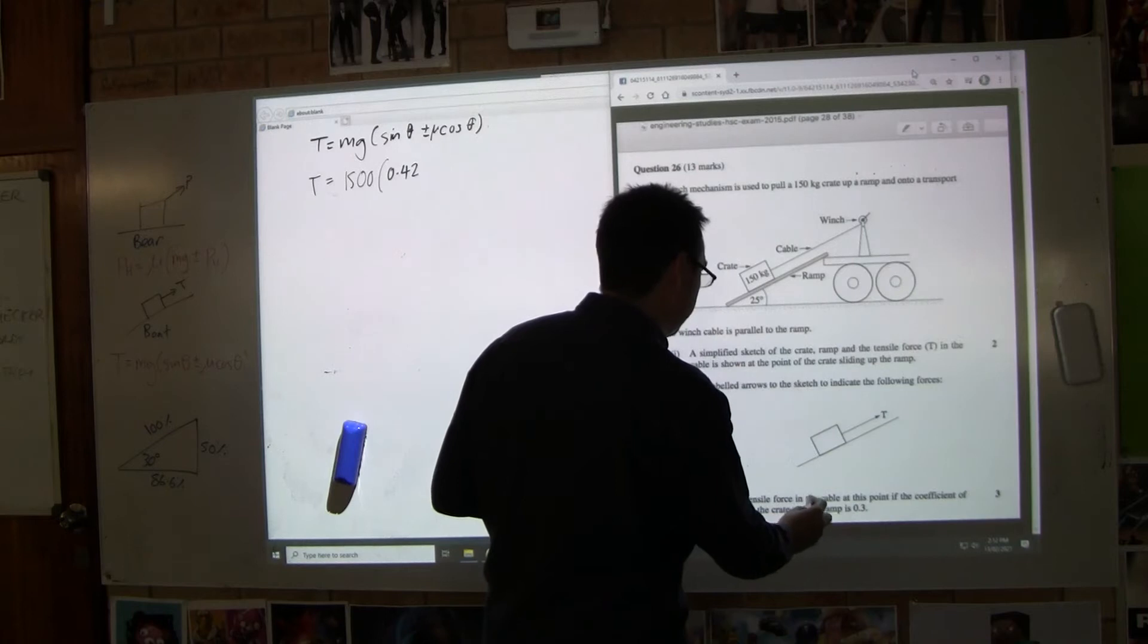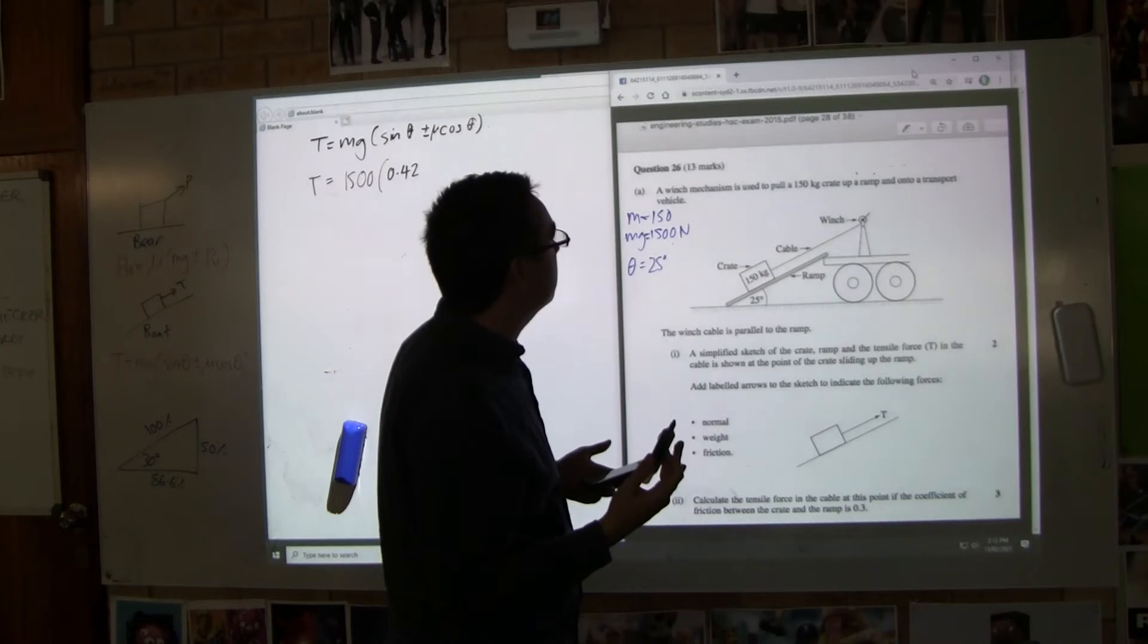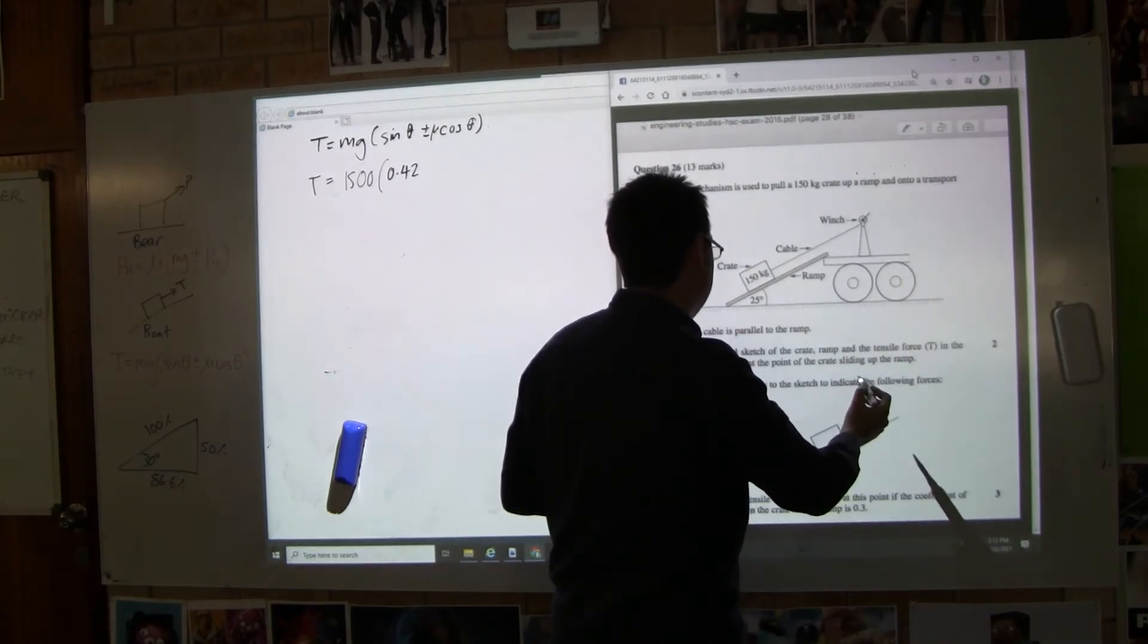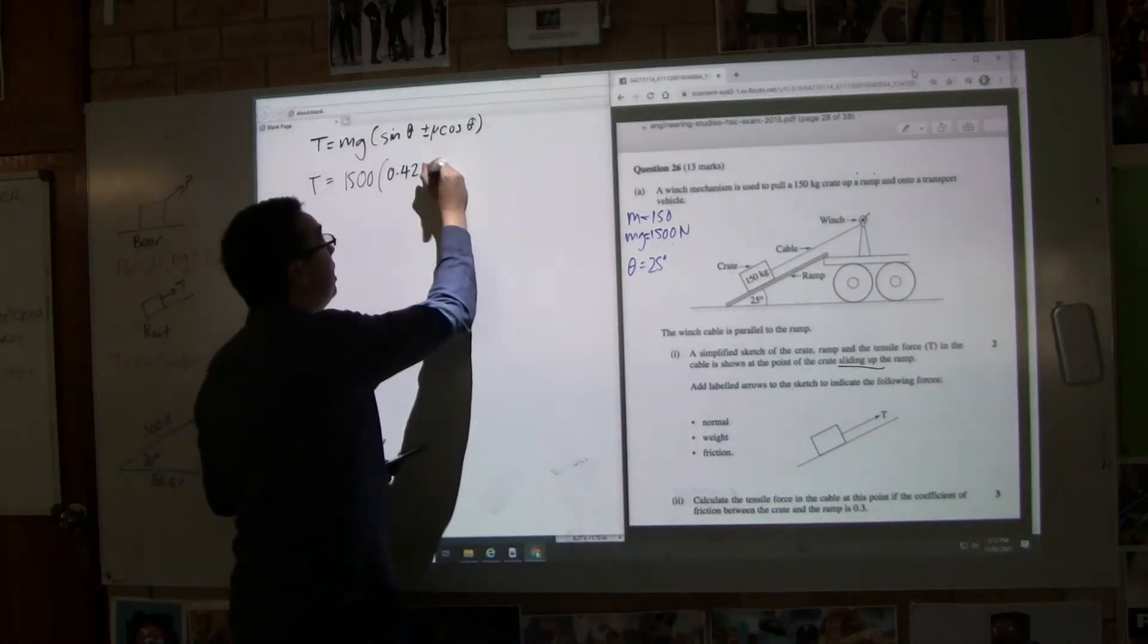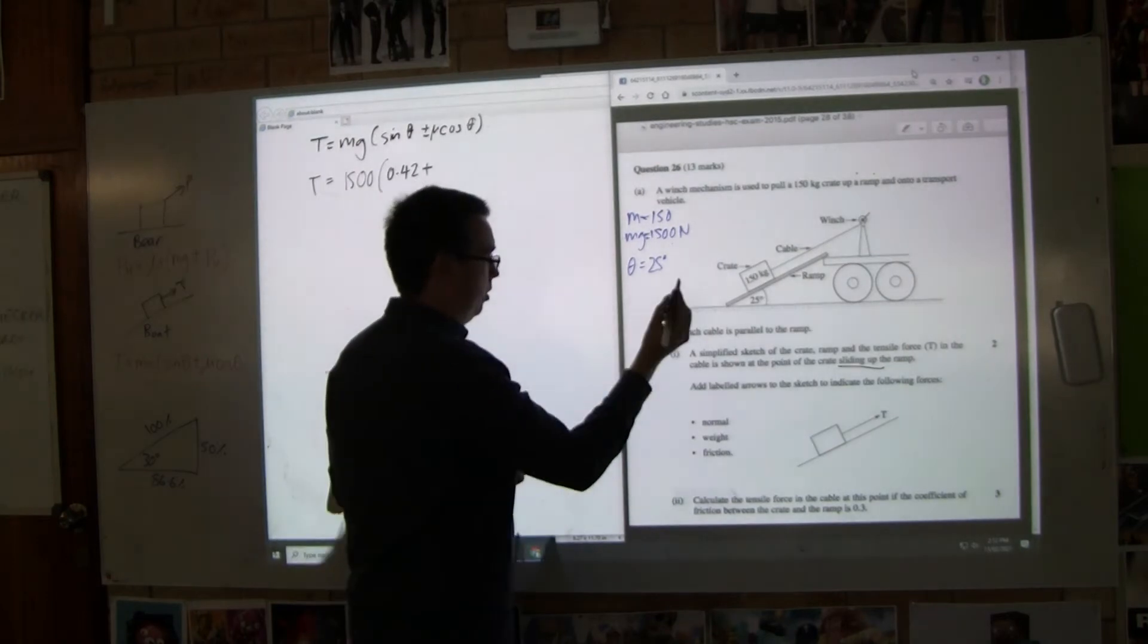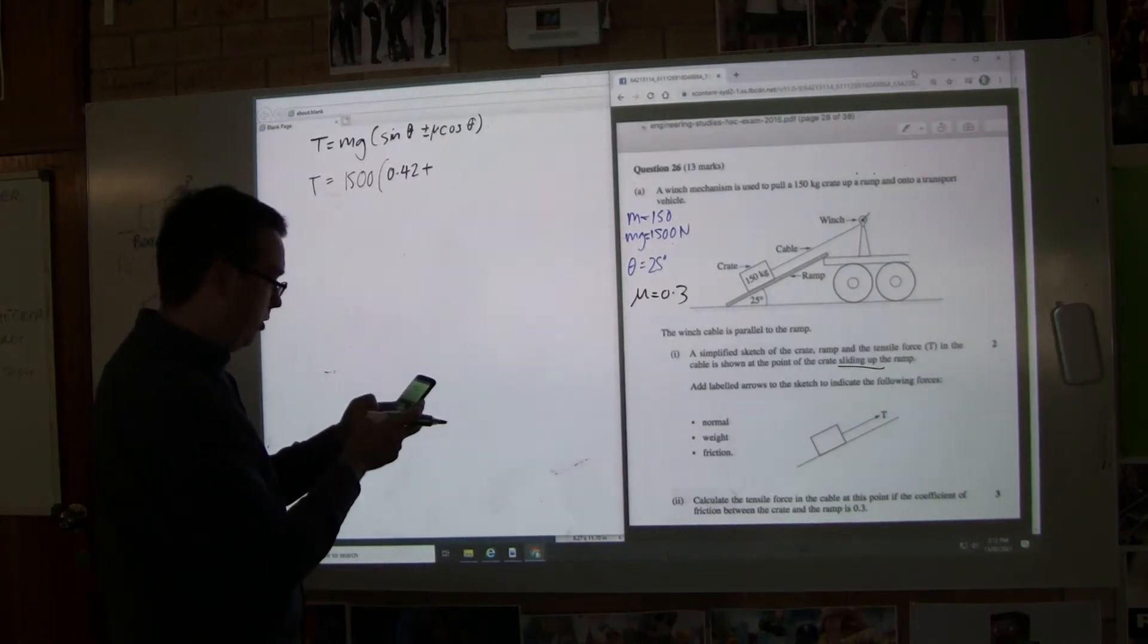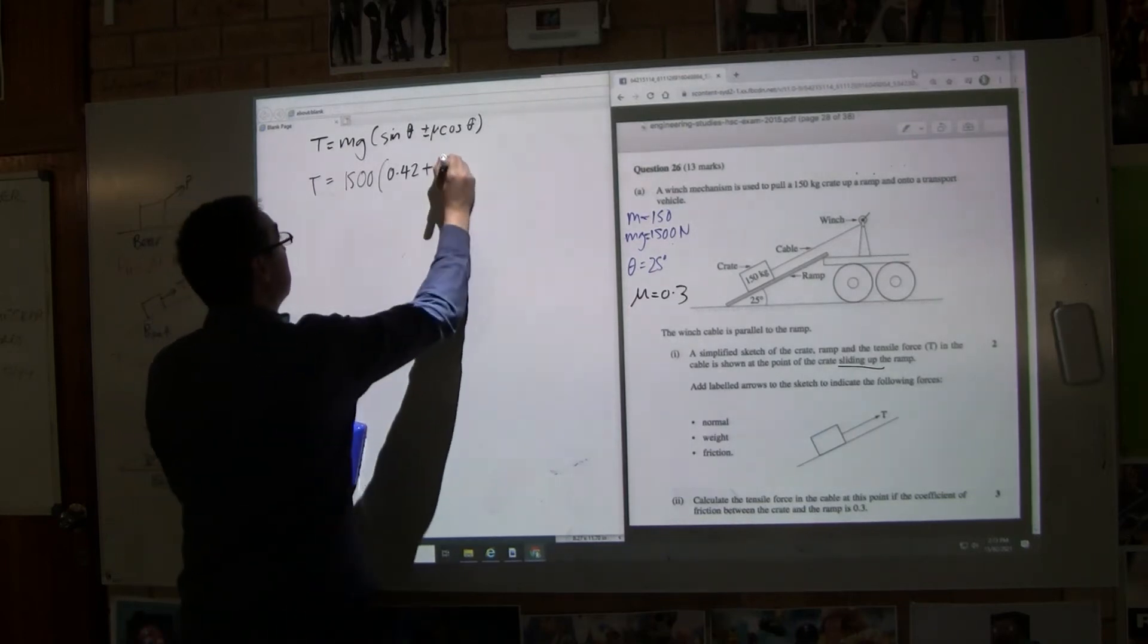Now, calculate the tensile force in the cable at this point. I'm reading the question. It's used to pull a crate up onto the vehicle at the point of sliding up. So it wants to go up. Does that mean friction is helping or hurting? It's adding to the friction. So mu, which is 0.3, cos 25. Cos 25 is almost 1, that makes sense, it's a bit bigger than 0.86. And then I'm timesing that by mu which is 0.3. I get 0.27.